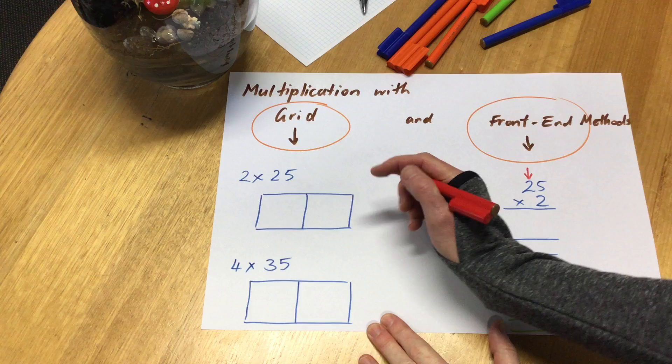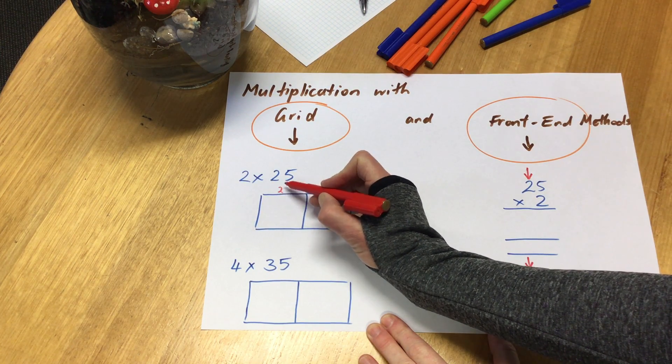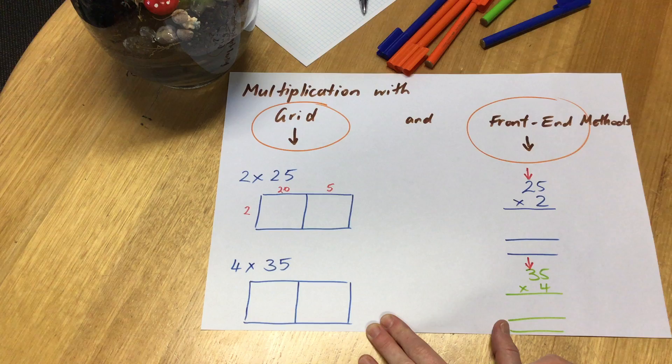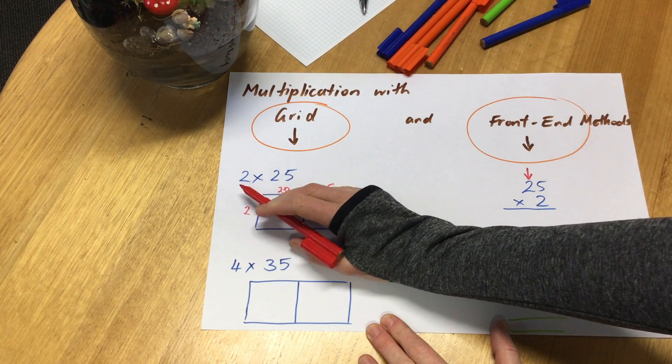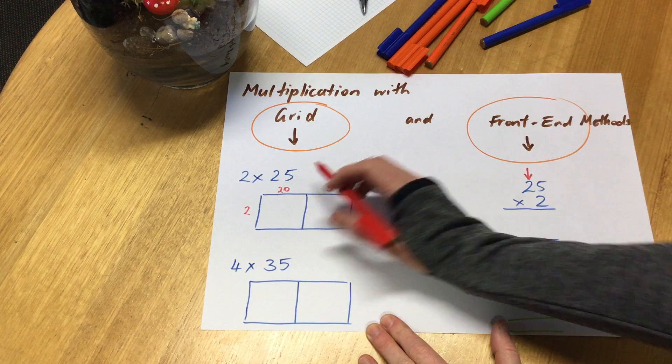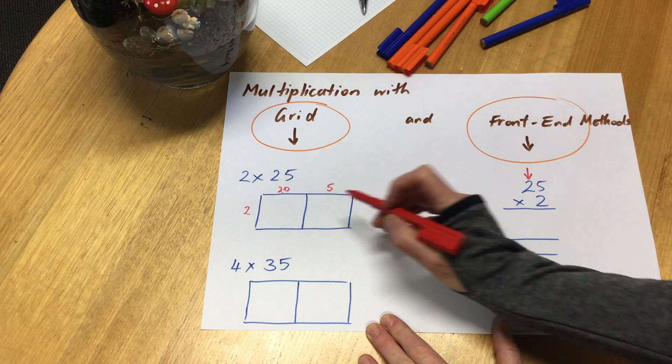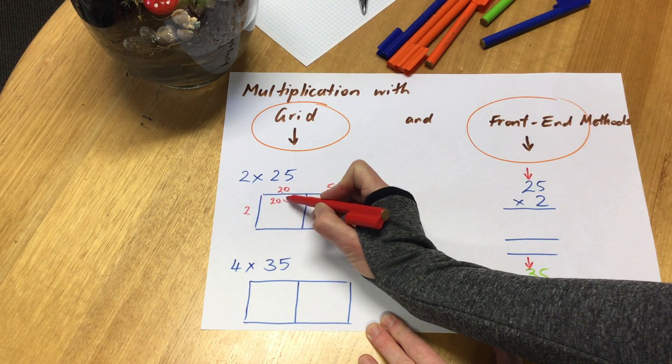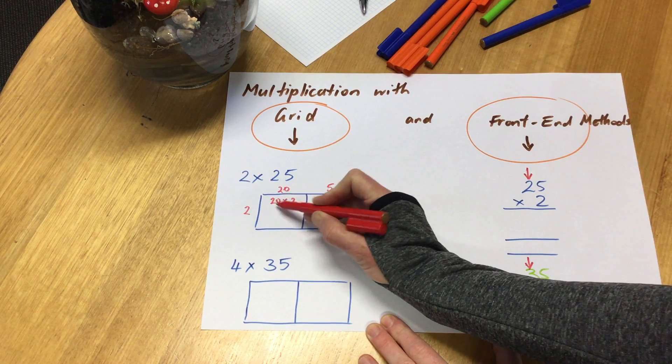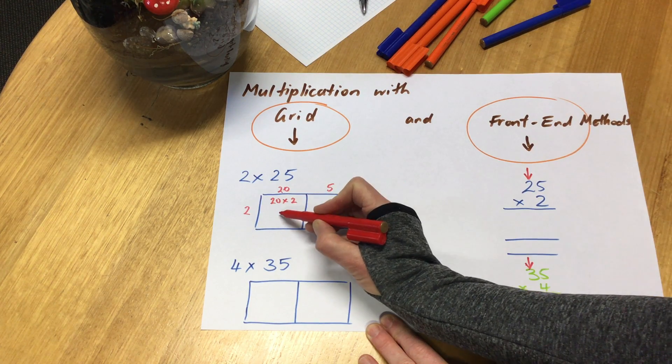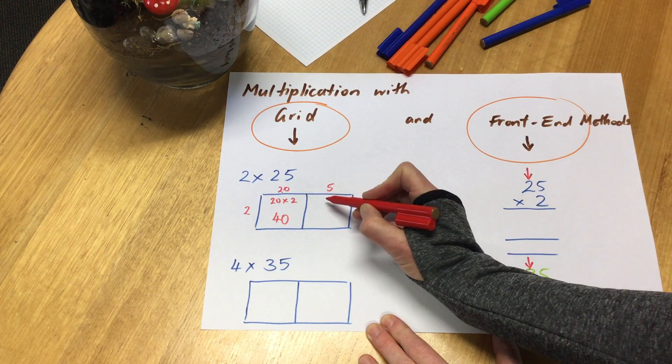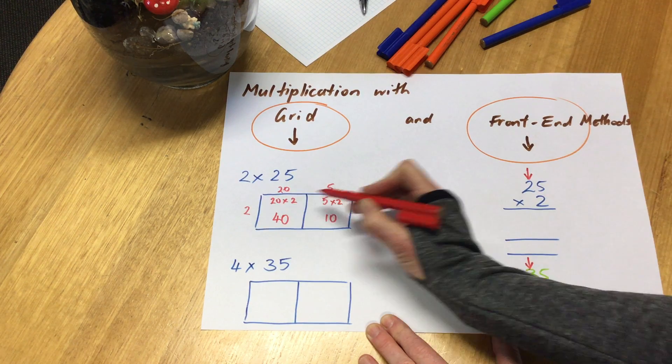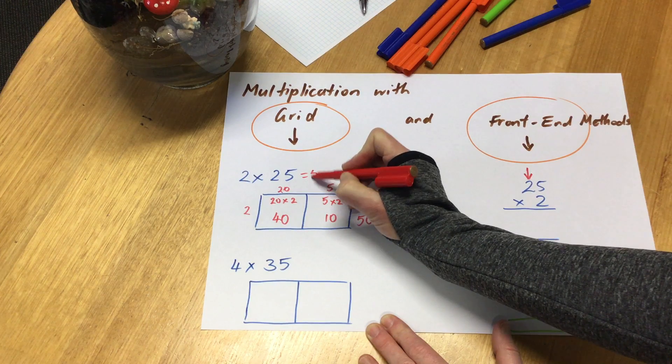When we do the grid method, we actually number split the big numbers, and if we've just got a single digit, then it just stays there. Here we have 20 and 5 multiplied by 2. 20 times 2, so double 20 is 40, and here I've got 5 times 2, which is 10. 40 plus 10 is 50.